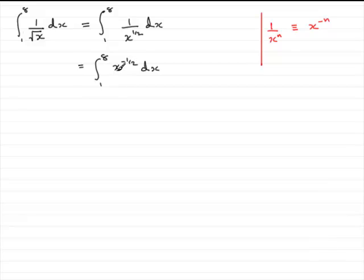Now, all we need to do is add 1 to the power when we integrate something like this and divide by the new power. So if we add 1 to minus a half, we're going to get x to the power a half and we divide by the new power. So we divide by a half. Don't forget to put the square brackets in and the limits go at the end here, going from 1 to 8.